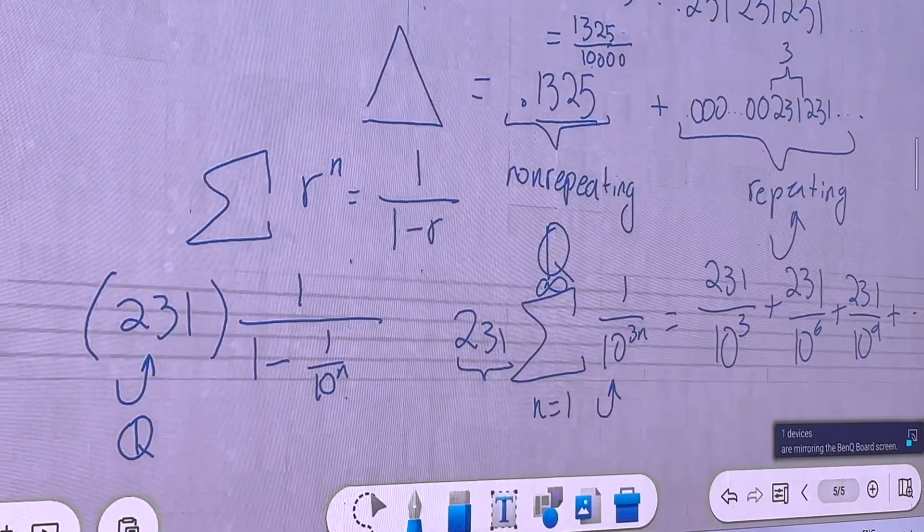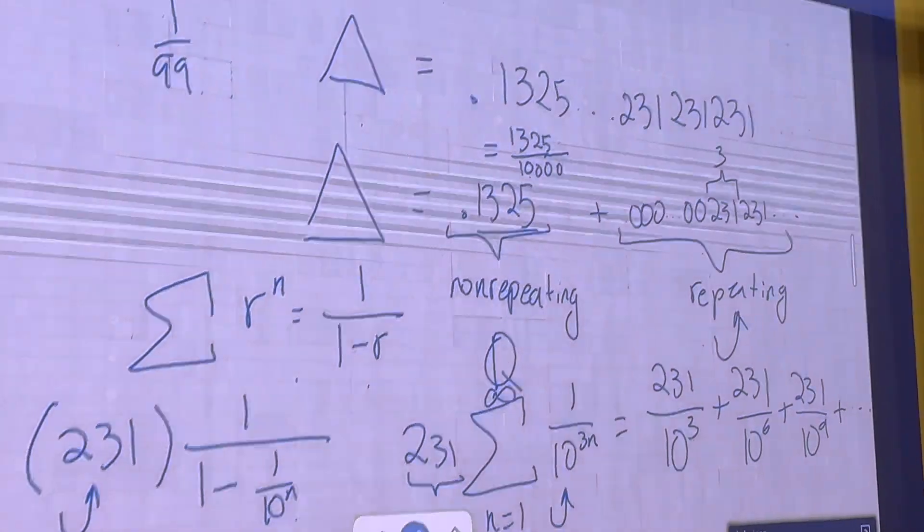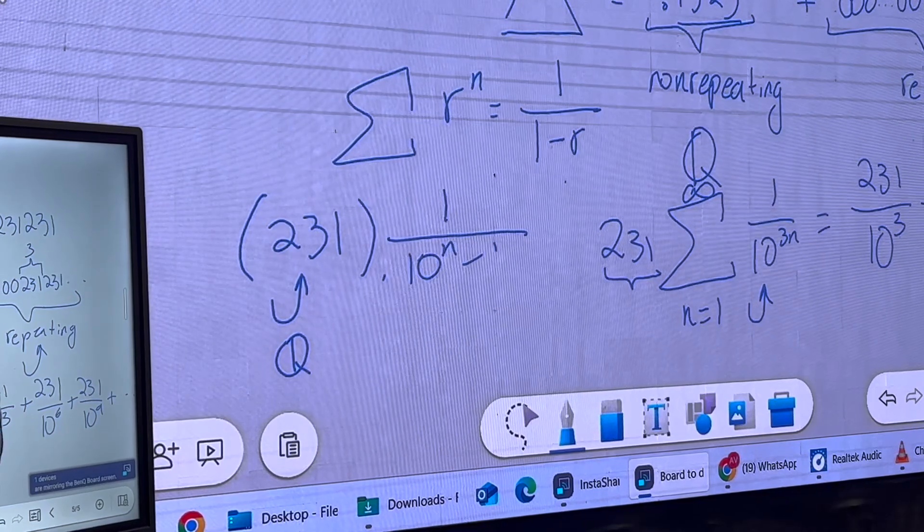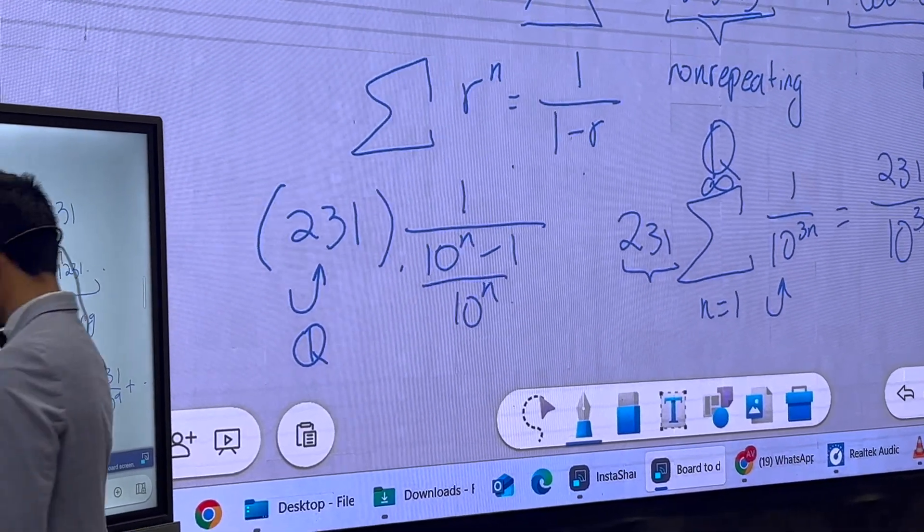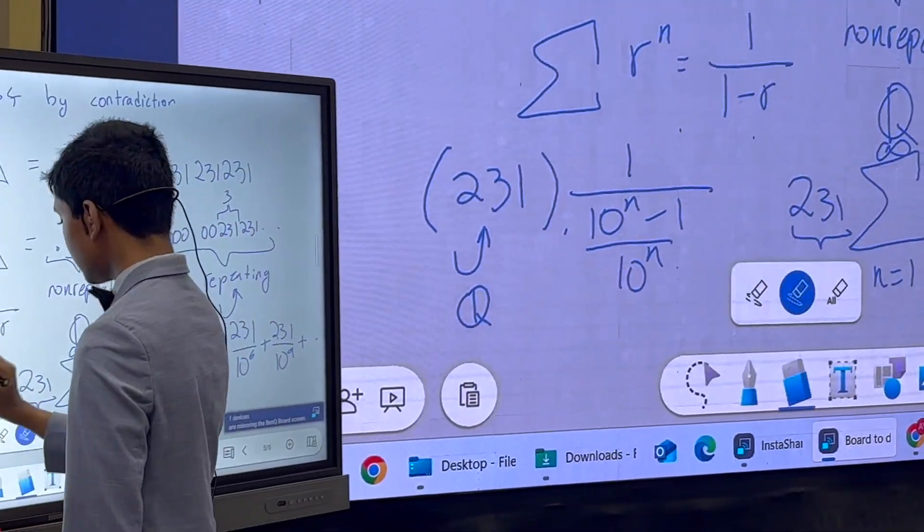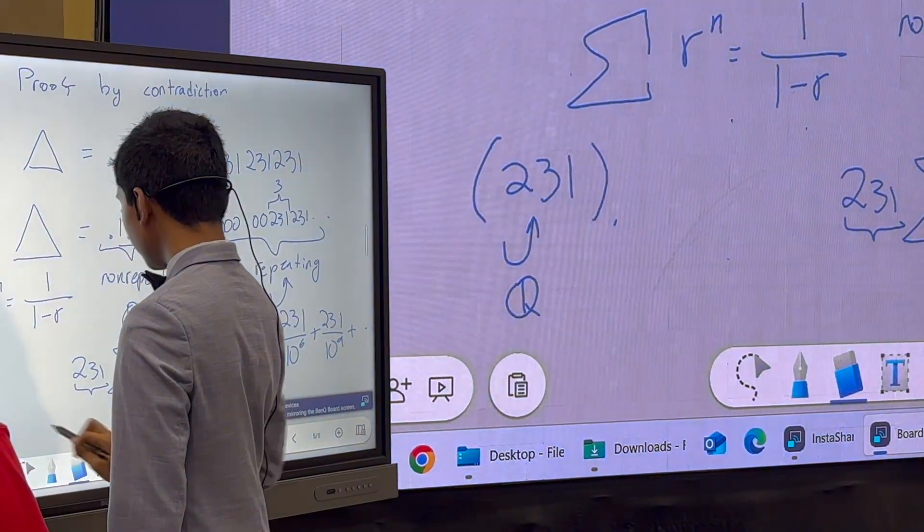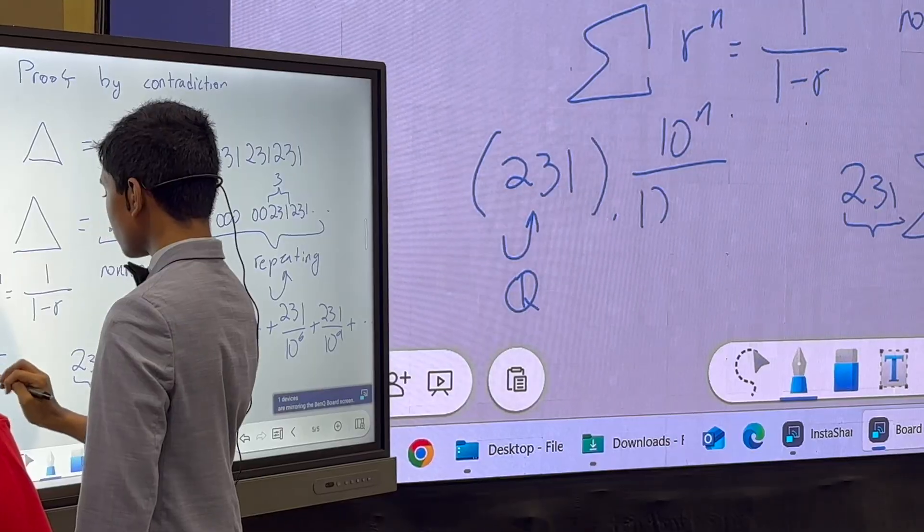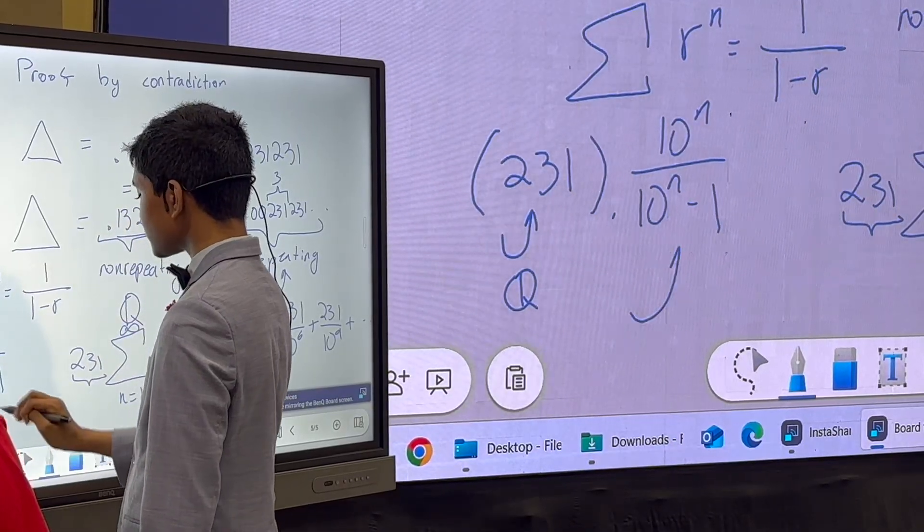And this right here is going to be (10^n - 1)/10^n, which, if you flip over, is 10^n/(10^n - 1). In other words, that is another rational number.